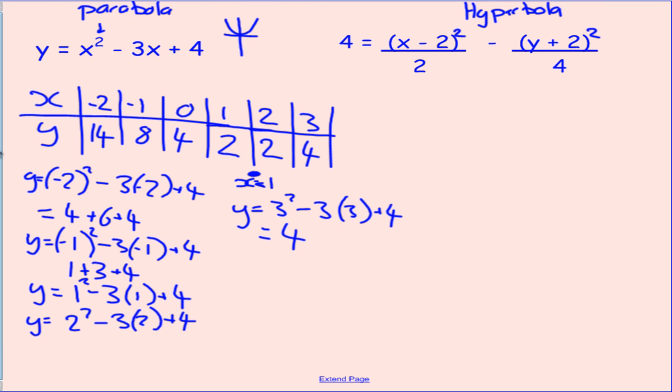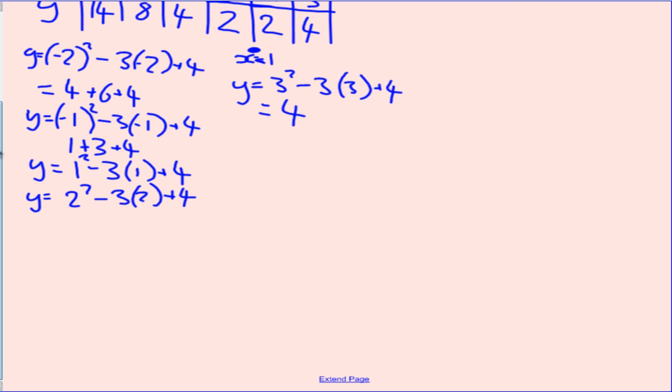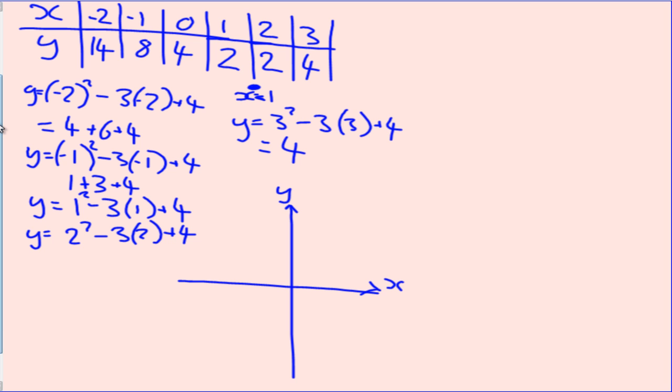So when it comes time to graphing these, you simply draw up your axes, label appropriately, x and y, plot these points. When x equals negative 2, y equals 14, so that's going to be up here somewhere. When x equals negative 1, it's going to be 8, so that'll be around here somewhere. When x is 0, y is equal to 4, so that'll be around there.